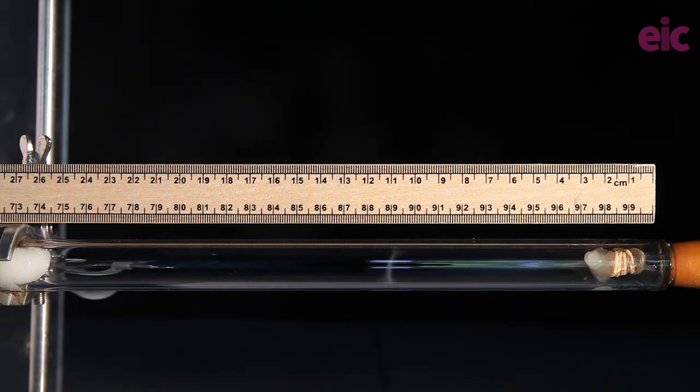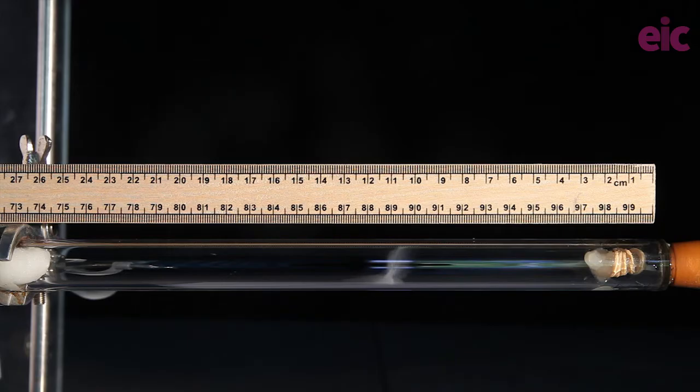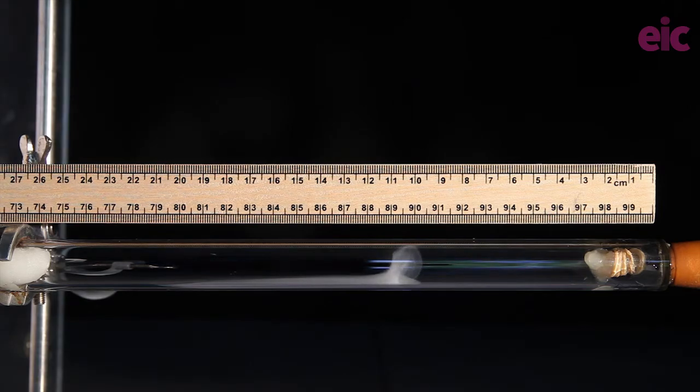After a minute a white circle of ammonium chloride forms closer to the source of the hydrogen chloride than to the source of the ammonia vapours. As Graham's law doesn't apply to this situation I tend to leave things here but it is worth at least mentioning that the particles of hydrogen chloride are heavier than those of the ammonia.